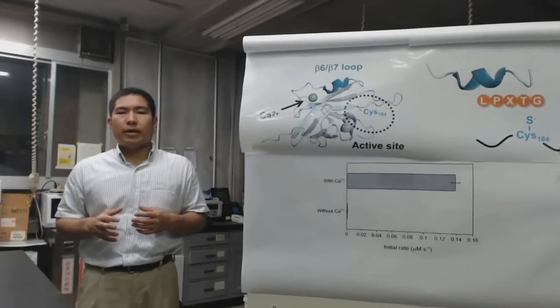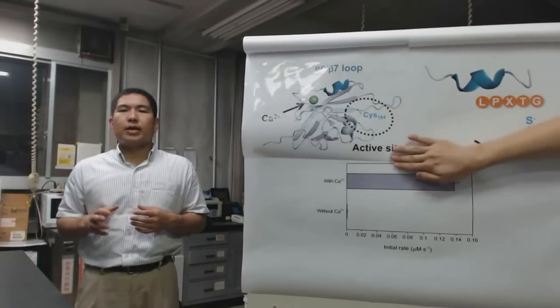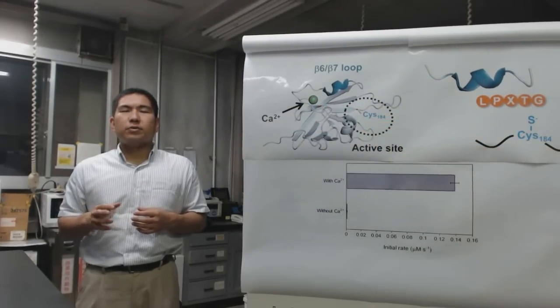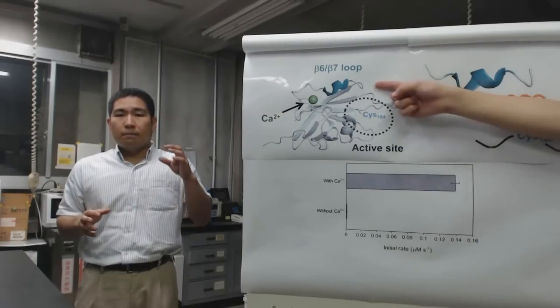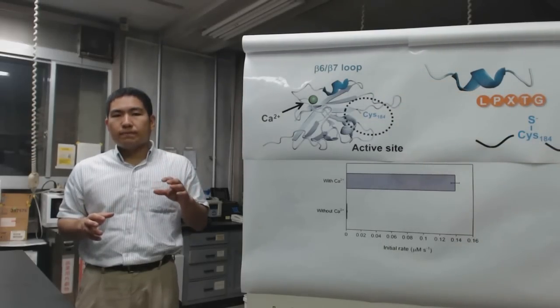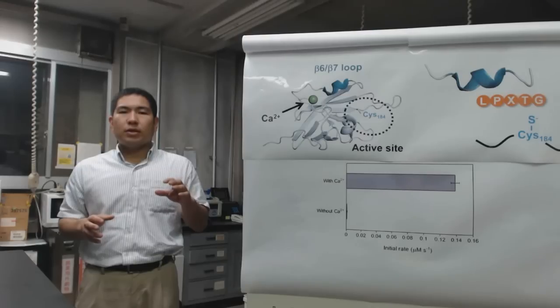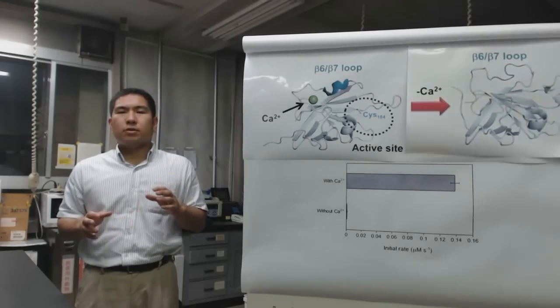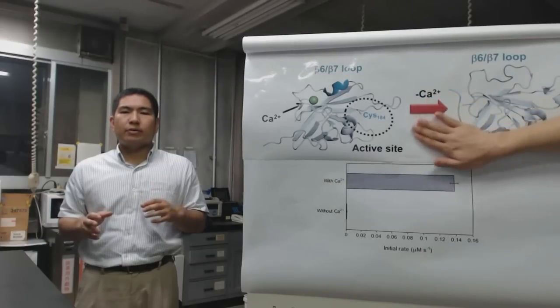The calcium binding site is distant from the active site. The role of calcium ion is known to stabilize the beta-6, beta-7 loop. This loop contacts with the alpha helix, so calcium ion is not directly involved in the active site.